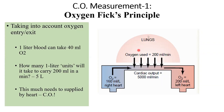The second part of the story is we know that in the lungs, the oxygen used per minute is 200 ml per minute. This can be easily measured by any device which measures the oxygen concentration in the inspired air and then subtracting it from when you expire the air — you'll know how much oxygen per minute is being used.